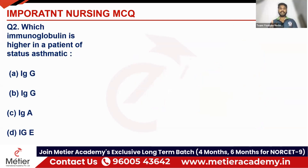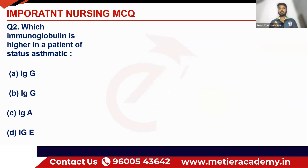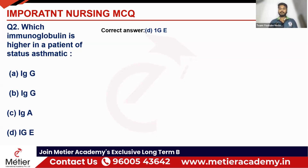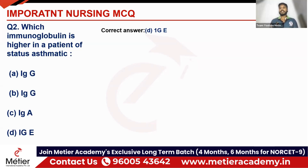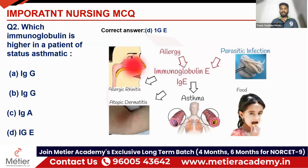Next question: which immunoglobulin is higher in a patient with status asthmaticus? Everybody knows asthma is an allergic condition, and allergy is related to option D — IgE. IgE is for hypersensitivity and allergic response to a particular stimulant. Asthma, atopic dermatitis, allergic rhinitis, and food allergies can all lead to allergic reactions — and they are all based on IgE.